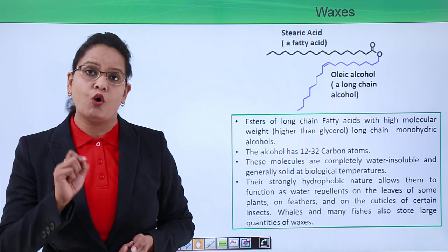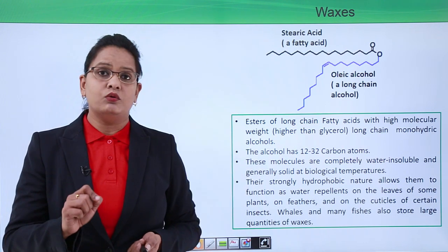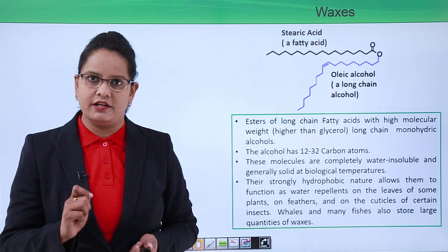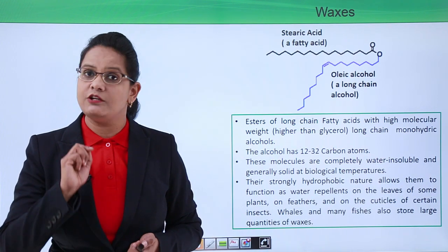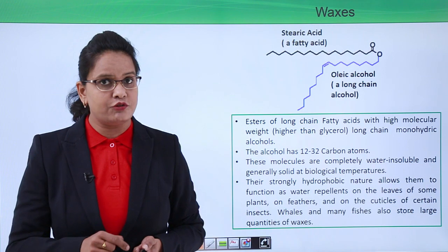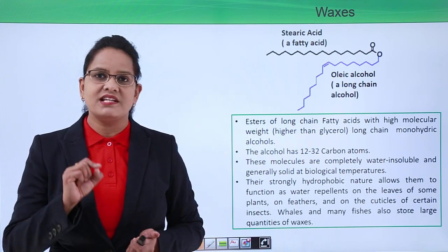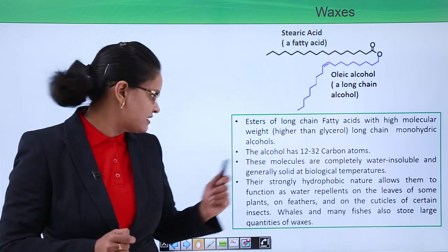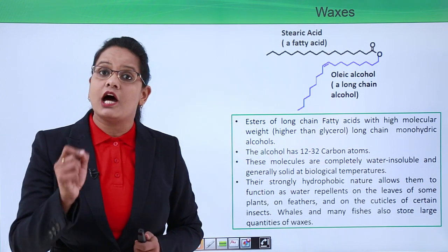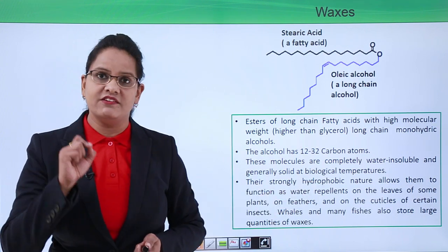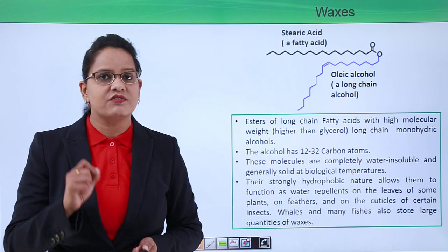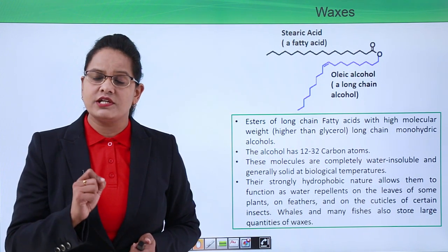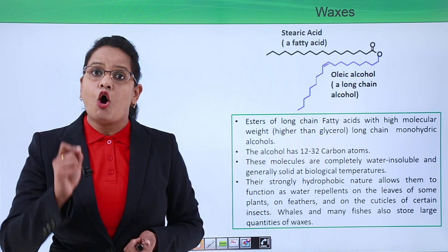The molecules are completely water insoluble. Waxes are generally solid in nature because they are completely water insoluble. Because of this hydrophobic nature, on the plant surface there is a layer because of which the plants do not absorb water - the water just falls off a leaf. These waxes are strongly hydrophobic which allows them to function as a water repellent on leaves. Some insects' outer layer is also water repellent, the feathers of birds are also water repellent - all because of waxes. Whales and fishes also store large wax to provide energy.